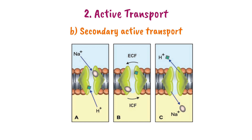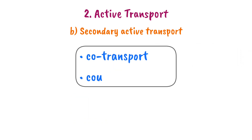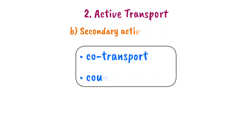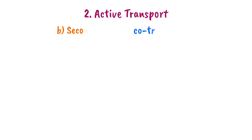Indirect energy is transferred — that's why this is called secondary active transport. Secondary active transport has two types: secondary active co-transport, and secondary active counter transport.